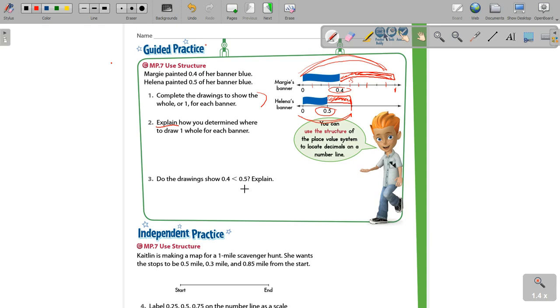Now here is another one where they want you to explain. Do the drawings show that 0.4 is less than 0.5? No, the drawings don't show that. So you know that your answer is going to be no based on the drawings, not the actual numbers, but the drawings. So the drawings do not show that 0.4 is less than 0.5, and I want you to explain that.